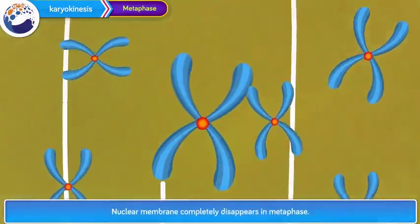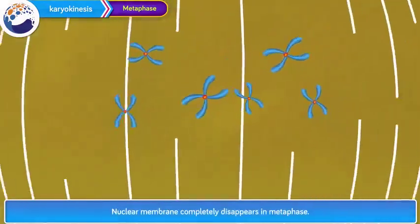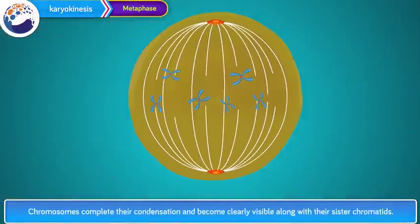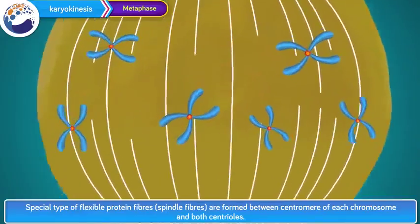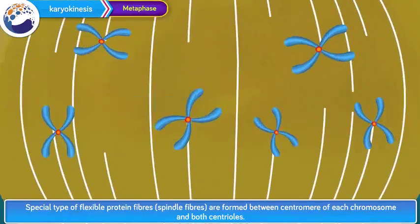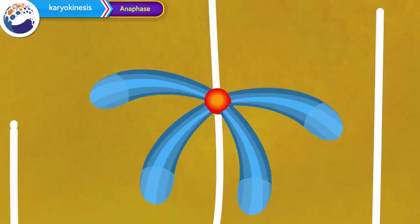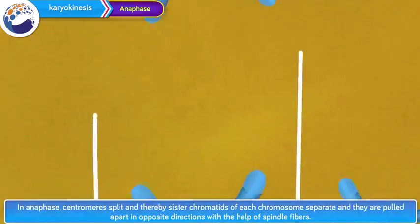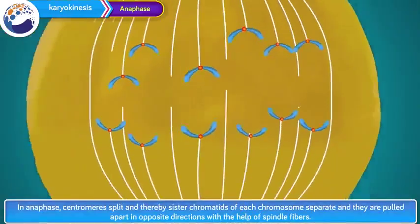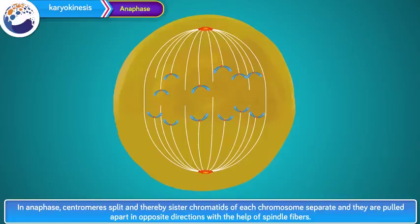In metaphase, the nuclear membrane completely disappears. Chromosomes complete their condensation and become clearly visible along with their sister chromatids. All chromosomes are arranged parallel to the equatorial plane or central plane of the cell. Special flexible protein fibers, or spindle fibers, are formed between the centromere of each chromosome and both centrioles.